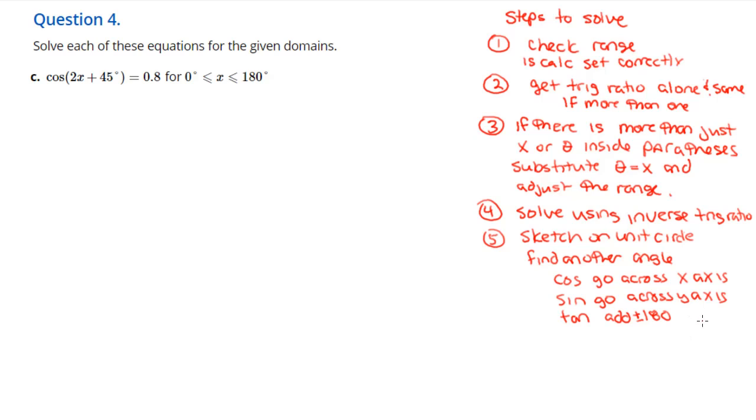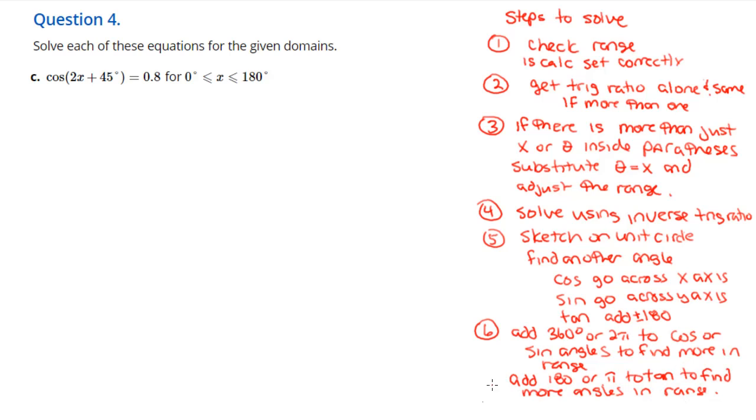Add 360 to sine and cosine to find more angles to fit within the range, and add or subtract 180 to tangent to find more angles within the range. Once we've got all the angles within our adjusted range, we're gonna substitute back in what we had taken out originally and then solve.